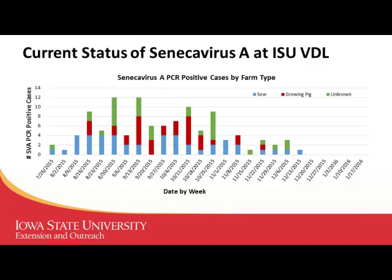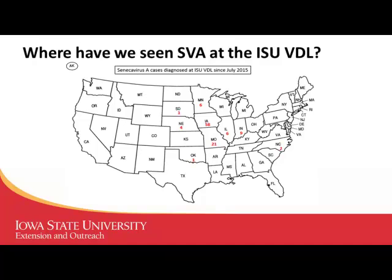This is different from PRRS and PED where we tend to see more issues in the cold — this one appears to behave differently, suggesting maybe a different vector for how the virus gets into herds. The geographic distribution of positive samples from Iowa State shows it's still predominantly an upper Midwest distribution — Iowa, Missouri, Minnesota, Illinois, Indiana — with a couple of positive samples from the southeast.